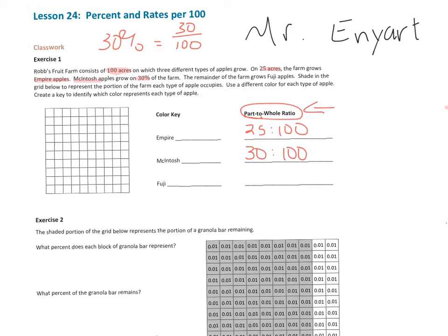And so now we get to the Fuji apples, and that information is going to be found right here. It says the remainder of the farm has Fuji apples. And how do we figure out the remainder? Well, we need to look at what we already know about empire and McIntosh. Empire was 25 out of 100. McIntosh was 30 out of 100. Together,